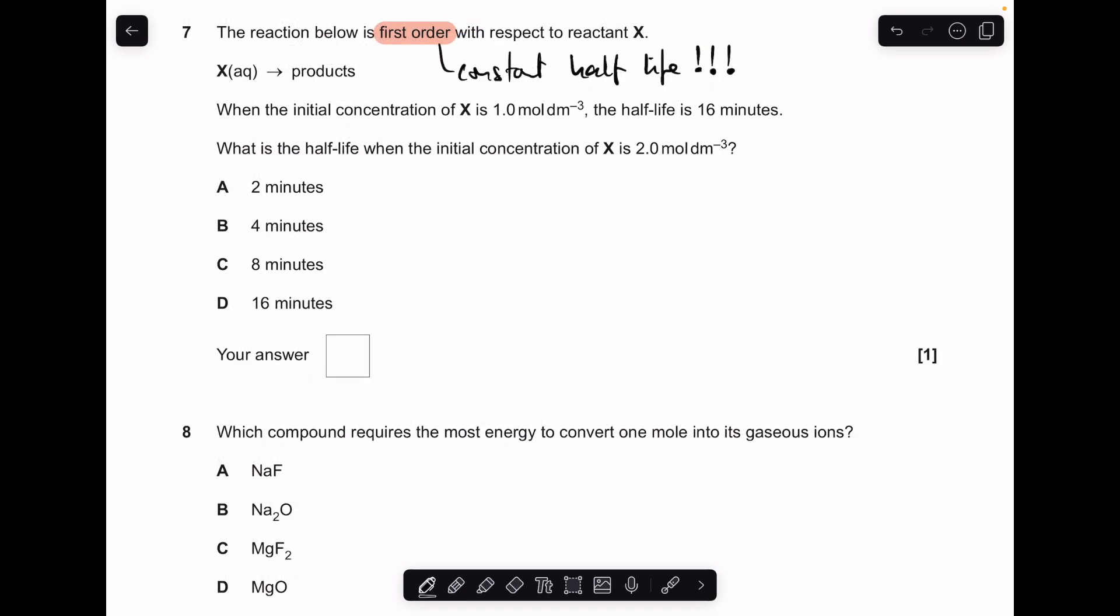Number 7. Super quick. So first order reactions, remember, have a constant half-life. So it doesn't matter that the initial concentration is different. It's always going to be, in this case, 16 minutes. So the answer was D.